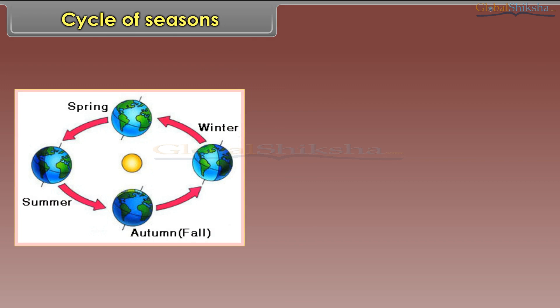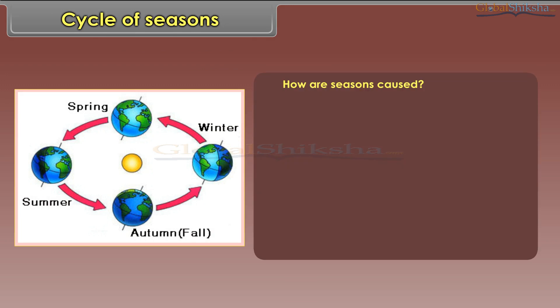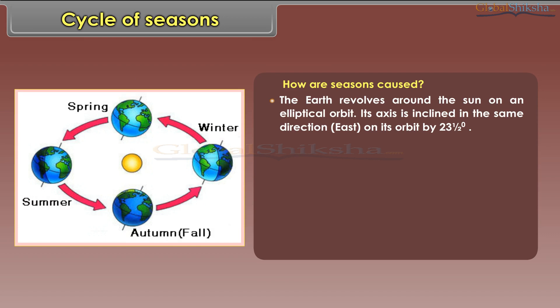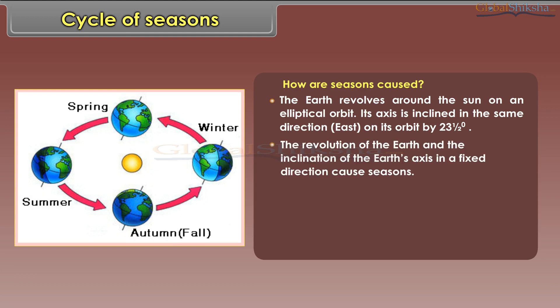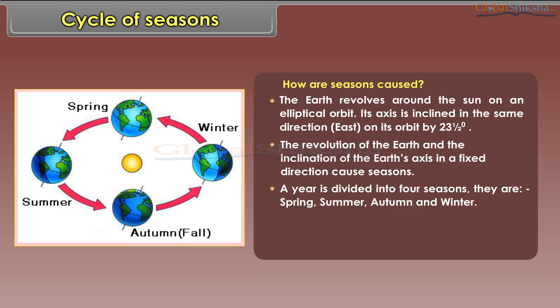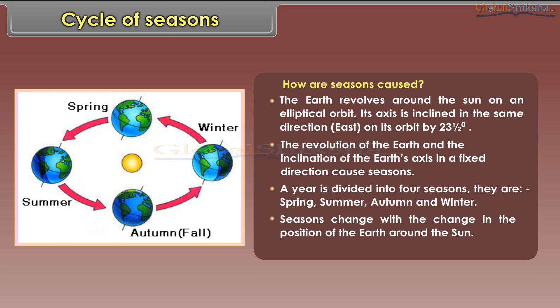How are seasons caused? The earth revolves around the sun on an elliptical orbit. Its axis is inclined in the same direction on its orbit by 23 and a half degrees. The revolution of the earth and the inclination of the earth's axis in a fixed direction cause seasons. A year is divided into four seasons: spring, summer, autumn, and winter. Seasons change with the change in the position of the earth around the sun.